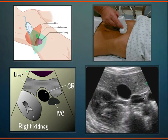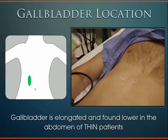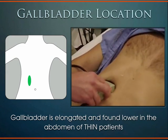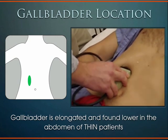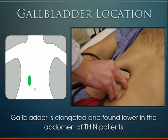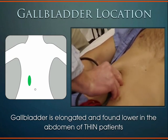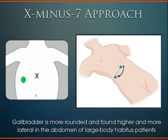In the transverse plane you'll see multiple circular structures — the gallbladder is the most anterior, closest to the skin line. The kidney, inferior vena cava, and aorta are also seen. In larger patients, try the X-minus-7 approach: flatten the transducer with the indicator to the patient's right, slide from the xiphoid process laterally 7 cm, and fan anterior to posterior between the ribs. In obese patients the gallbladder tends to be rounder, located higher and more lateral.